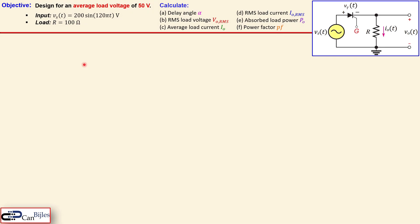Our objective is to design for an average load voltage of 50 volts, where the input is a pure sine wave: 200 sine(120π·t), so the frequency is 60 Hz and the amplitude is 200 volts. The load will be 100 ohms. The circuit shows the input voltage Vs, the load, and the thyristor with the gate control, which will be used to achieve this 50 volt design target.